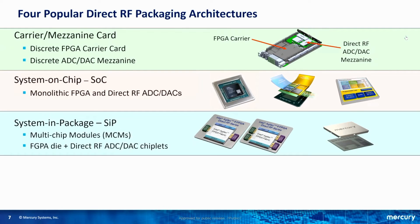Another solution is called system in package. This is a multi-chip module, meaning instead of everything on one monolithic chip, you have multiple die joined together — usually on a substrate in a package — so the FPGA die can be tied directly to the chiplets for the data converters, both A-to-D and D-to-A, all combined in one package. Here are a couple of examples: an Intel system in package and a Mercury SIP.